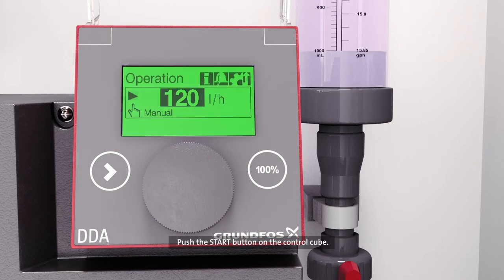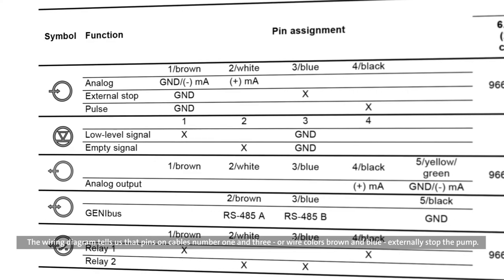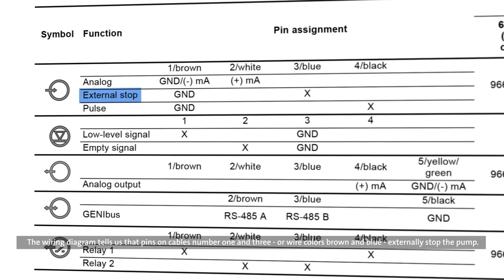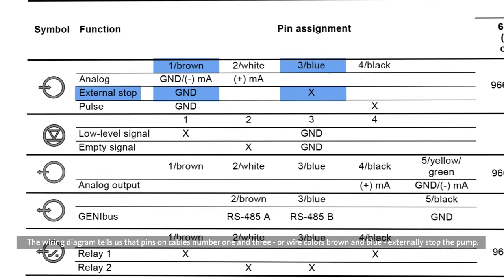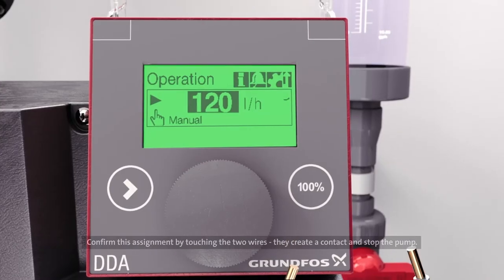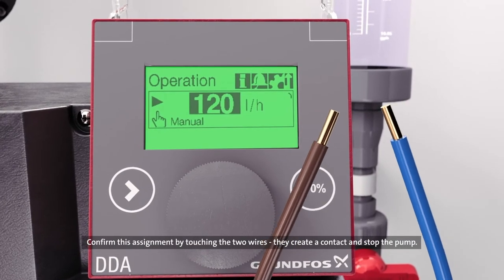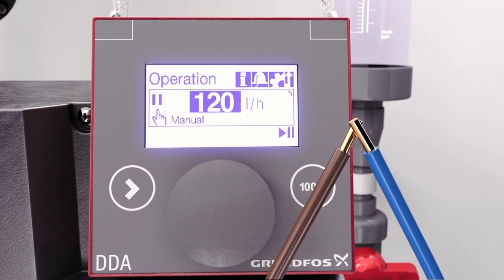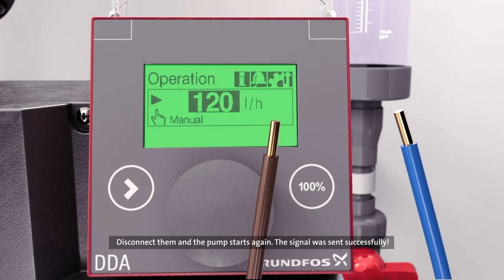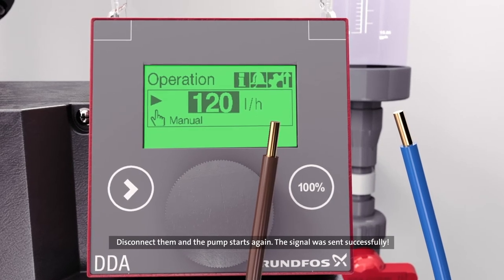Push the start button on the control cube. To send a remote stop start signal, we use a dry contact. No voltage needed. The wiring diagram tells us that pins on cables number 1 and 3, or wire colors brown and blue, externally stop the pump. Confirm this assignment by touching the two wires. They create contact and stop the pump. Disconnect them and the pump starts again. The signal was sent successfully.